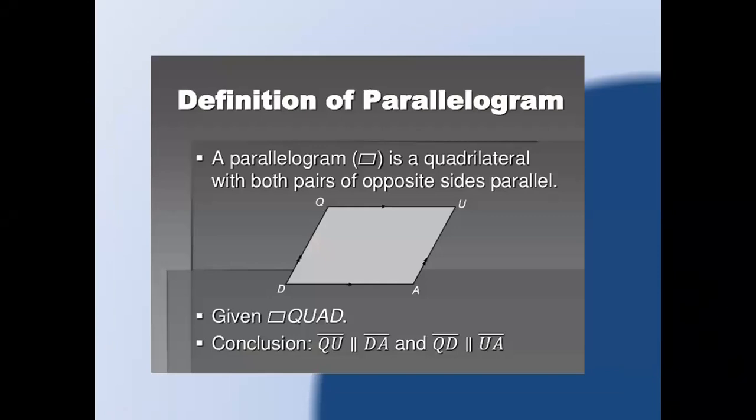First we have parallelogram. A parallelogram is a quadrilateral with both pairs of opposite sides parallel. You can represent a parallelogram with the sign you can see on the screen — parallelogram QUAD. The conclusion is QU is parallel to DA and QD is parallel to UA.